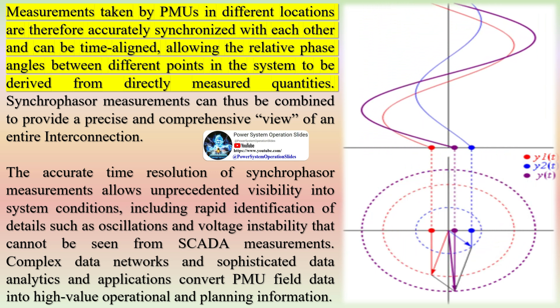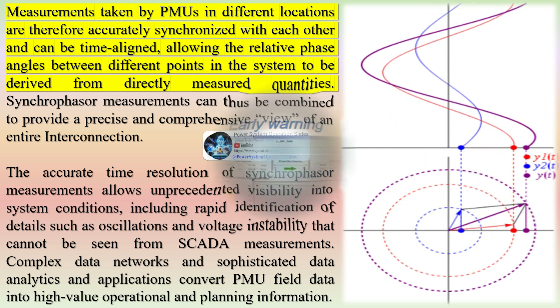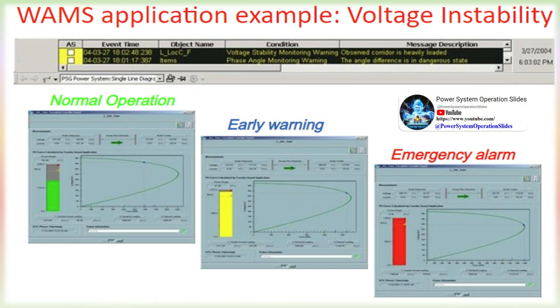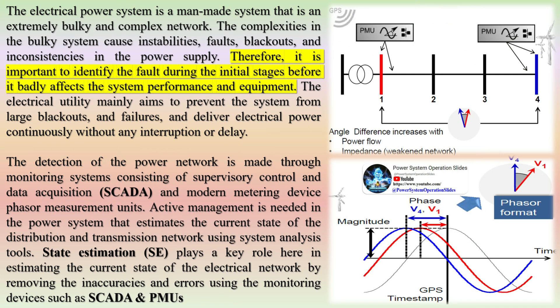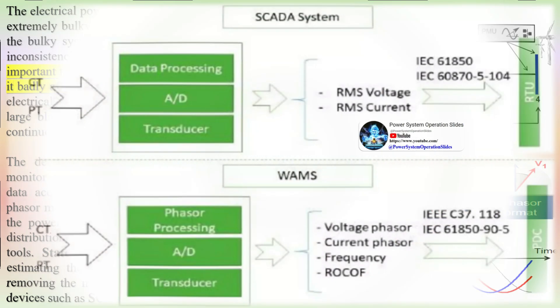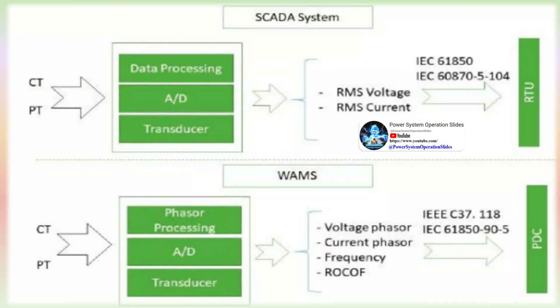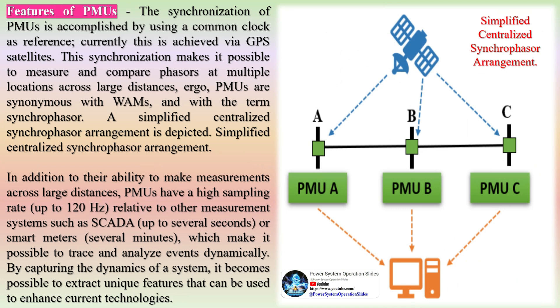A synchrophasor is a time-synchronized measurement of a quantity described by a phasor. Like a vector, a phasor has magnitude and phase information. Devices called phasor measurement units (PMU) measure voltage and current, and with these measurements derive parameters such as frequency and phase angle. The measurements may be either fundamental components at 50 or 60 Hz, and of the positive sequence for the three-phase representation. Data reporting rates are typically 30 to 60 records per second. In contrast, current SCADA systems often report data every 4 to 6 seconds — over a hundred times slower than PMUs.